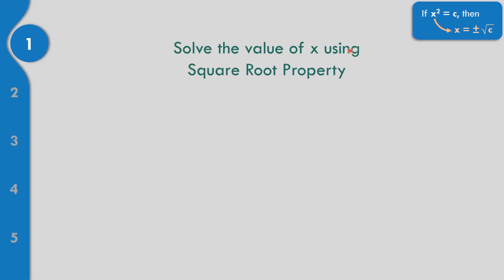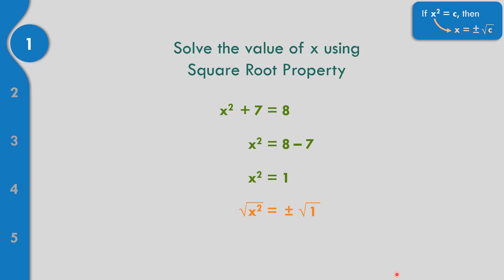Let us solve using the square root property. Example 1: x squared plus 7 equals 8. Bring down x squared and move positive 7 to the right — that becomes negative 7. So 8 minus 7 equals 1, giving x squared equals 1. Write the square root on both sides: x equals positive negative square root of 1, which is positive negative 1. The solutions are 1 and negative 1.